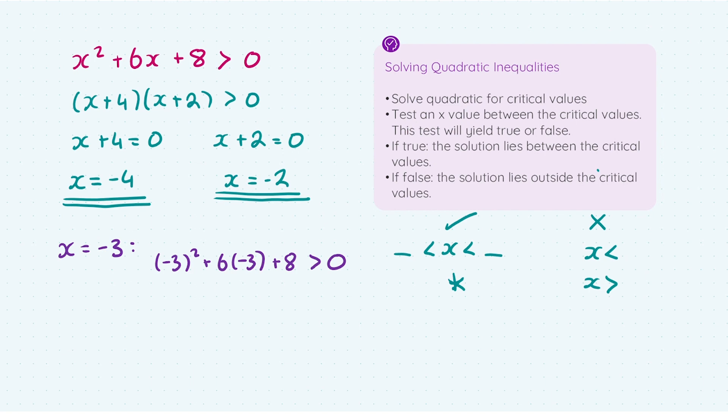I'm going to work out the left-hand side, and I get -1 > 0. I have to decide here, is that statement true or is it false? Is minus 1 greater than 0? It's not — the answer is false.